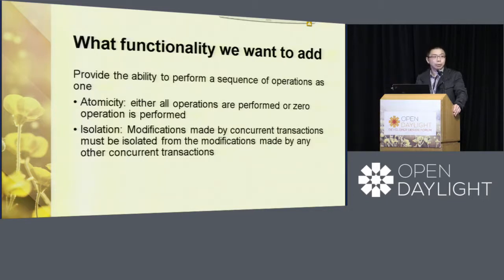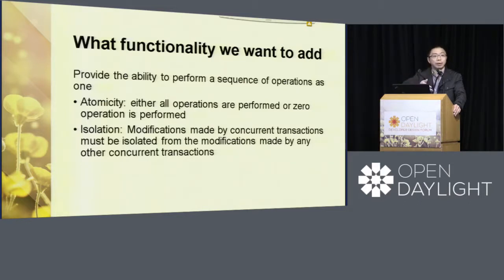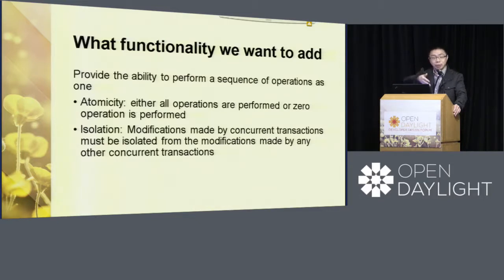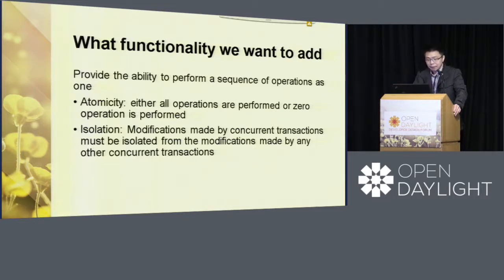That's what we call a network transaction: either all success or all fail. It cannot leave something in the middle. Without this, the application needs to handle all rollback by itself — if one through three succeed and the fourth fails, you roll back three, two, one; if a fifth also succeeds you roll back four, three, two, one. Each application doing it on its own is the current situation. We want to introduce this at the infrastructure level.